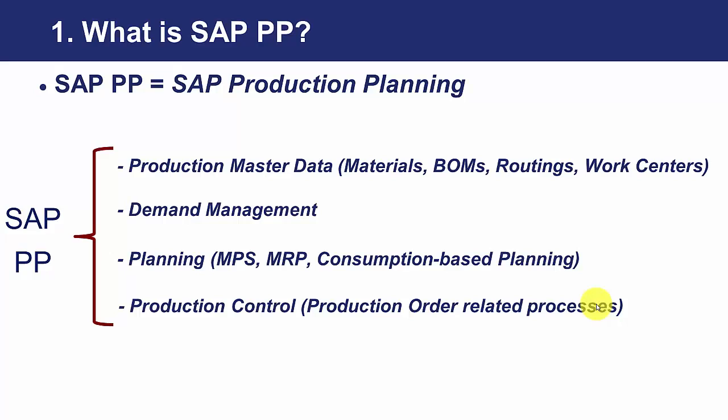SAP PP also covers demand management — how the demand enters our production unit through sales orders or independent requirements. It includes the planning processes: master production schedule, material requirement planning, consumption-based planning, and capacity management. And finally, production control, a process that covers all the steps from the creation of a production order to the close of it.